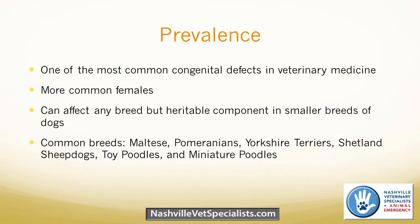PDA is one of the most common congenital defects we see in veterinary medicine — some days we see multiple cases in one day. It is more common in females compared to males, but we see it in both. It can affect any breed, but there is thought to be a heritable component in some smaller breeds. Commonly affected breeds include Maltese, Pomeranians, Yorkies, and Miniature Poodles, though we can really see it in any breed of dog.